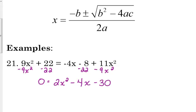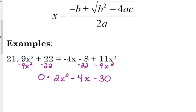This is actually an example that is factorable — we could take out a GCF and factor it. But I want to show you how to do this using the quadratic formula as well. After putting your equation in standard form, write down a, b, and c. Here: a is positive 2, b is negative 4, c is negative 30.